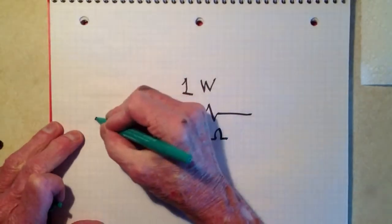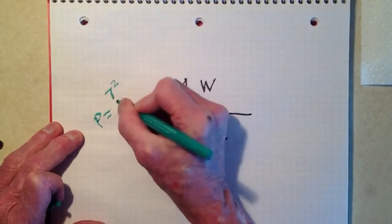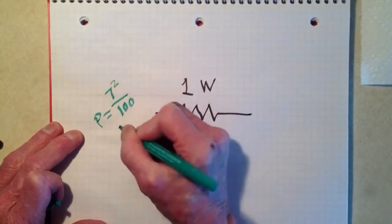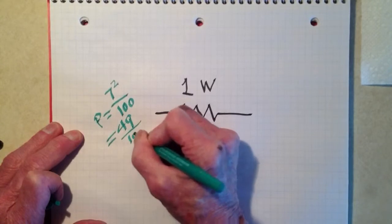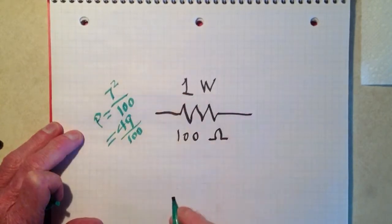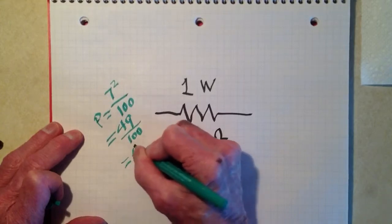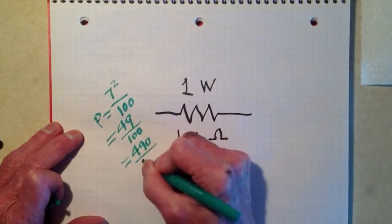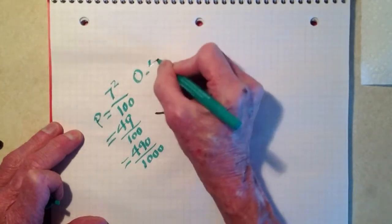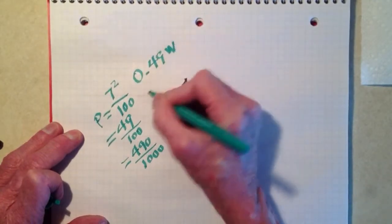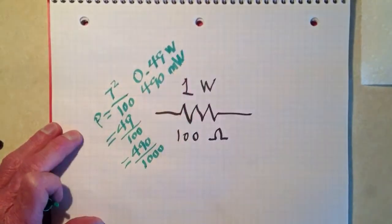Then the power that it will dissipate is 7 squared divided by 100 equals 49 one-hundredths, or 0.49 watts, 490 milliwatts.